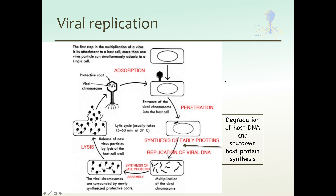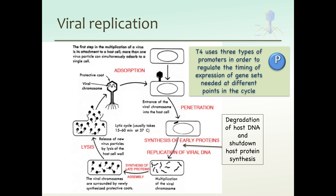So let's look at the lytic cycle. You should remember this from last semester — I'm just going to add a few layers to what you already understand. We're going to talk about the lytic cycle with a focus on the types of promoters the phage uses to regulate the timing of different gene expression. There are essentially three points: early gene expression, middle gene expression, and late gene expression with release of phage particles.